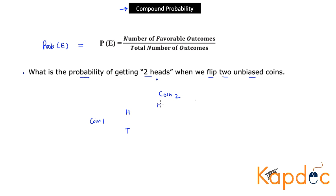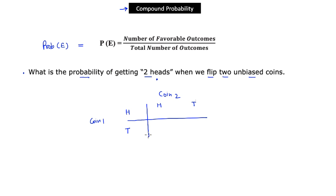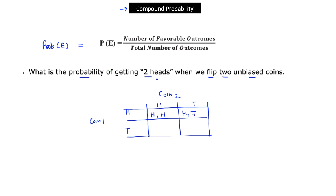Coin one will result in either a head or a tail, and likewise coin two will also result in either a head or a tail. In the matrix, we list every combination: head-head, head-tail, tail-head, and tail-tail. This gives us a complete space of all possible outcomes.